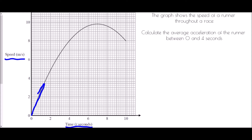It starts off quite steep and then gets progressively less steep, meaning it is not accelerating at a constant rate. Once we get to the section where the line starts to curve downwards, this is showing us deceleration — whatever the item is, it is getting less fast. The change in speed is negative.